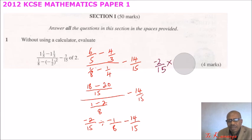Okay, let's correct that. That's not the way it's supposed to be. It should be multiplied by 8 minus 8 over 1. You minus 14 over 15.